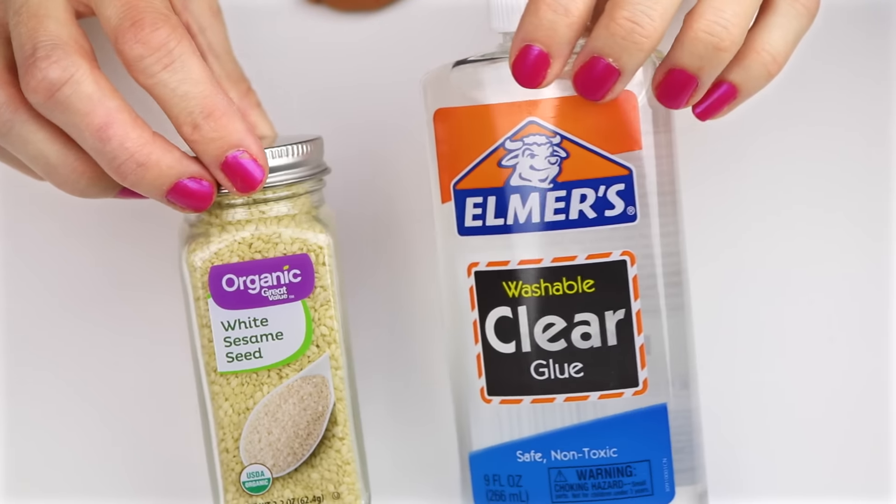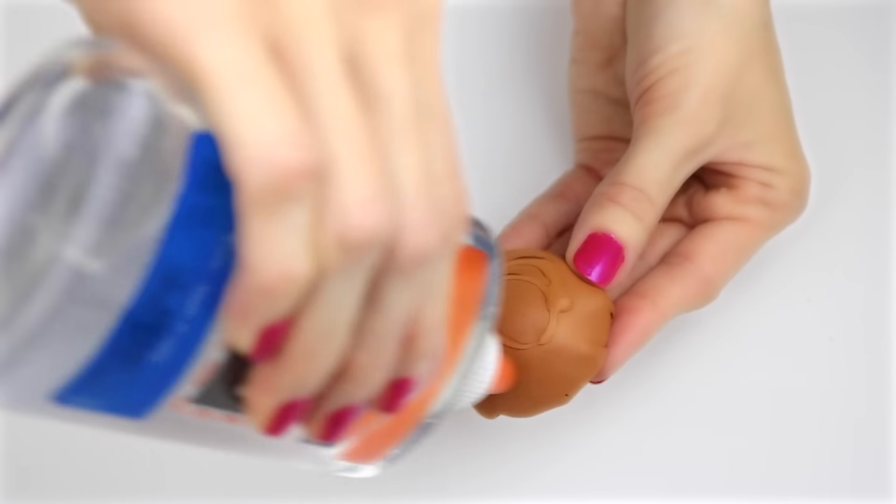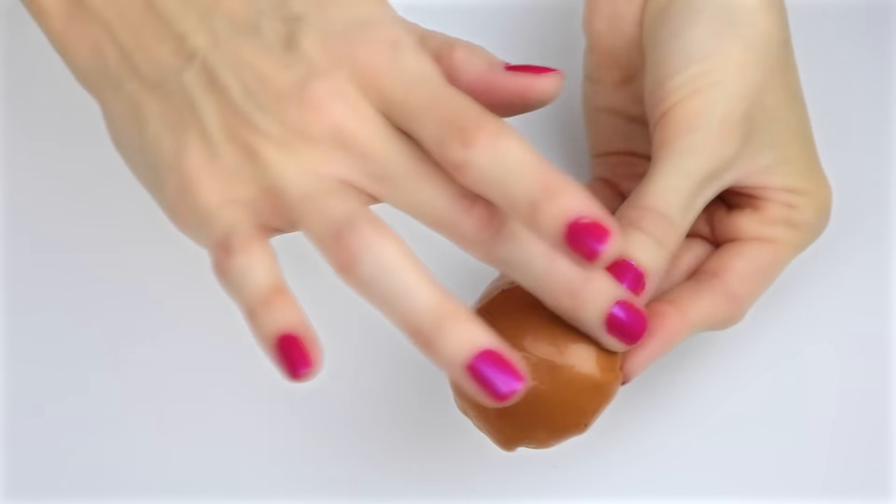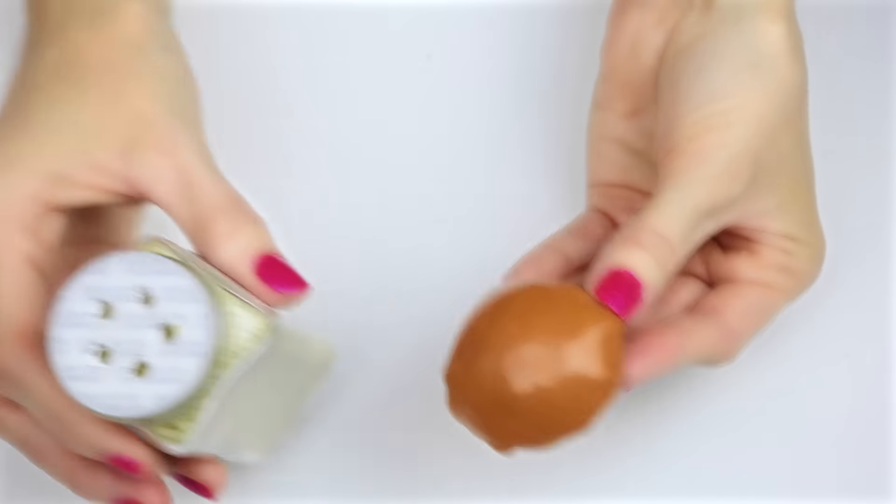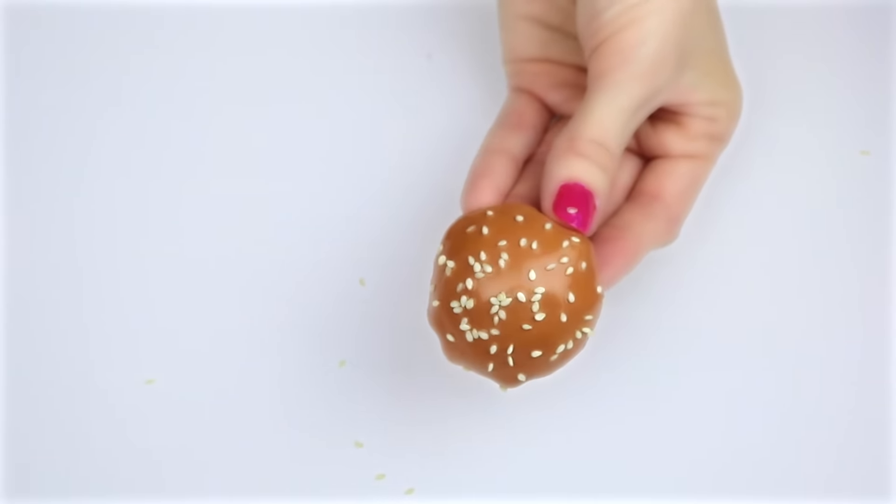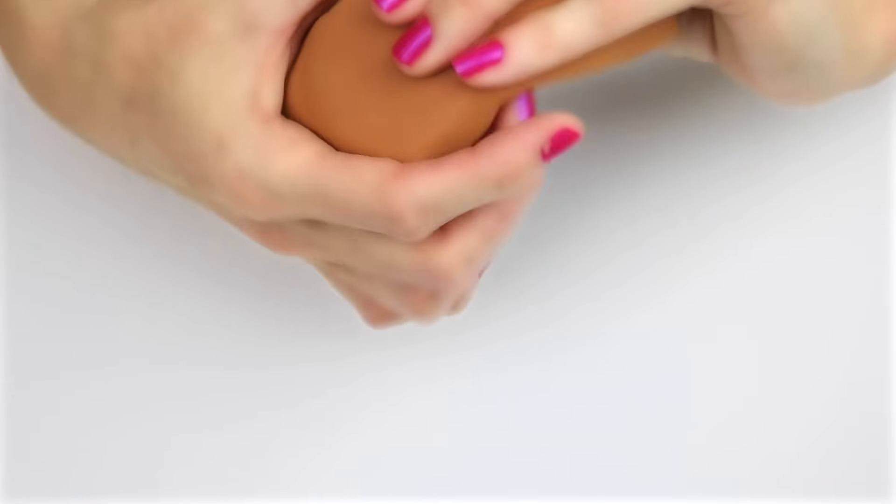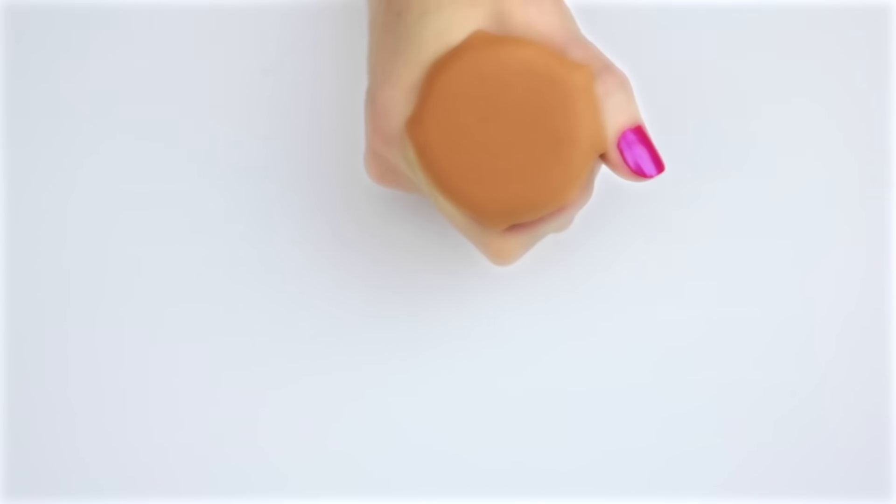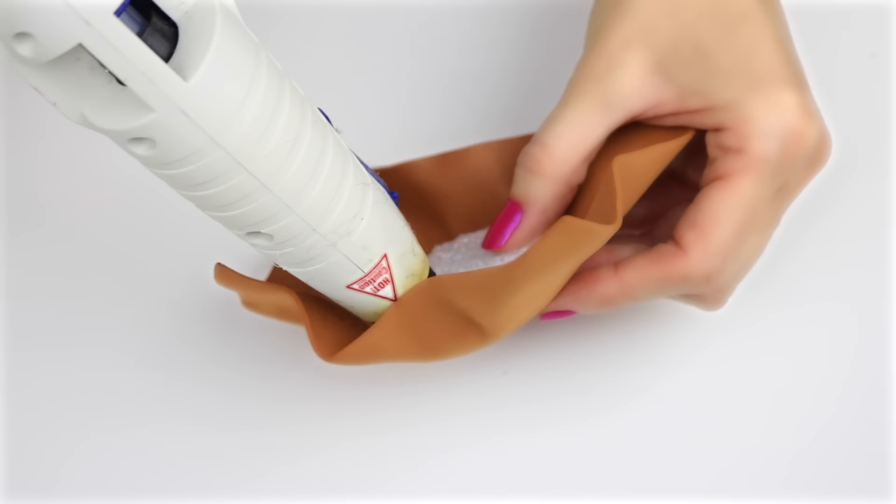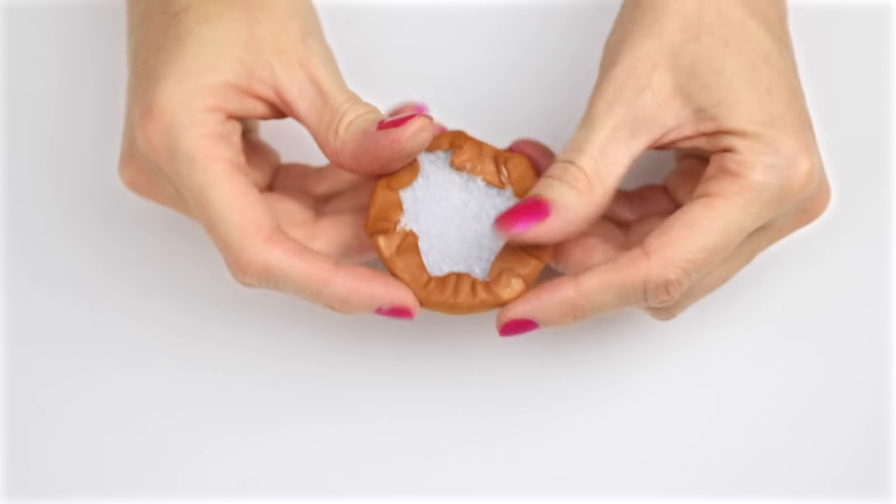I'm going to use sesame seeds and Elmer's clear glue to make the seeded bun. Apply glue to the foam, then sprinkle some sesame seeds on top. Set that aside and let it dry. Once it's dry, add another layer of glue over the top. To make the bottom part of the bun, take the piece of styrofoam that was slightly larger that had the dome shape cut off and repeat the same steps with the foam and hot glue. And that is how you make the bottom of the bun.